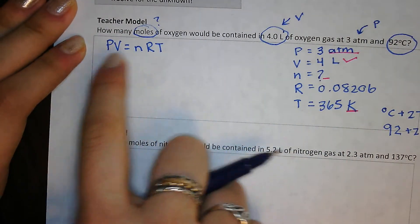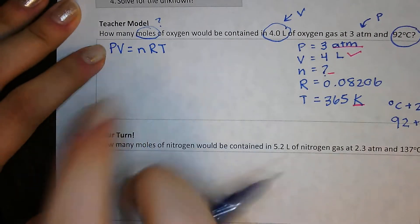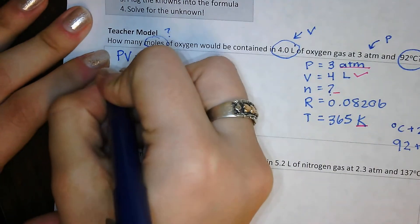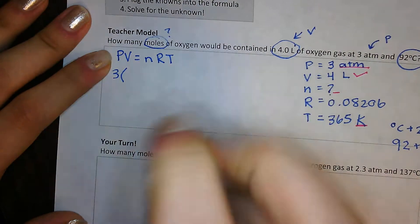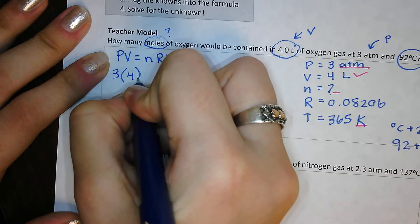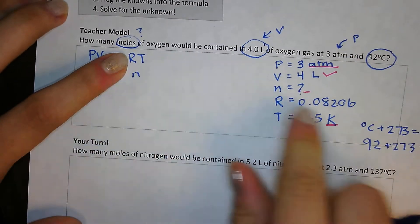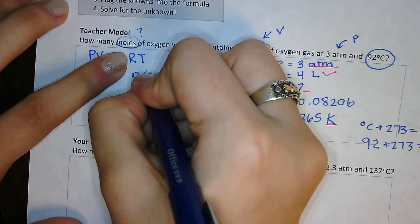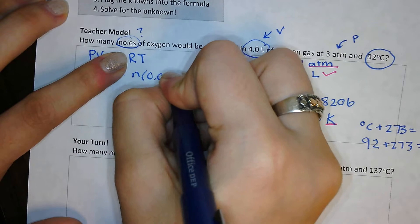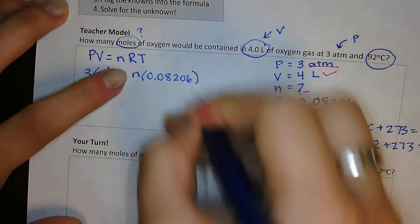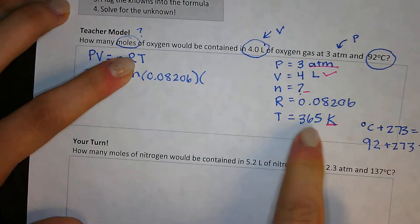And now I have a number for all of my variables except N, which is what I'm trying to find. So now I have to just plug everything in. So P is equal to 3. 3 times V is equal to 4. 4 is equal to N is what I'm trying to find. R is 0.08206 times T, and T is 365.